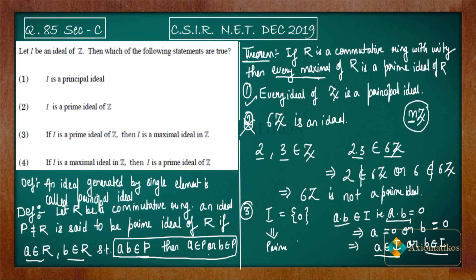But do you think I = {0} is maximal? No, it is not, because it is the smallest ideal. If you know the definition of a maximal ideal, you will easily see why I = {0} is not a maximal ideal. Please look at the definition of maximal ideal in your book. So the third statement is incorrect.